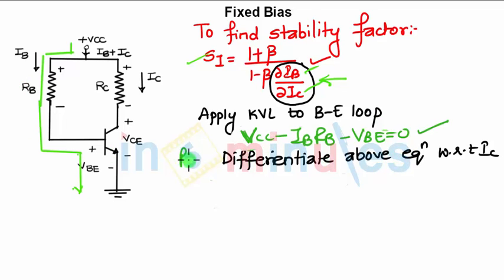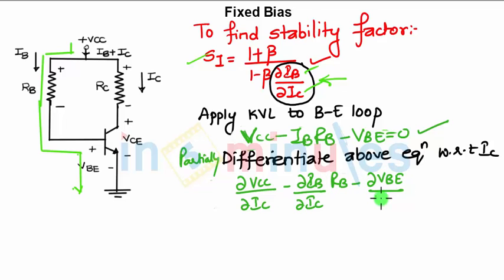Then partially differentiating the above equation with respect to Ic, what we will have? Change in Vcc with respect to Ic minus change in Ib with respect to Ic into Rb minus change in Vbe with respect to Ic equals 0.